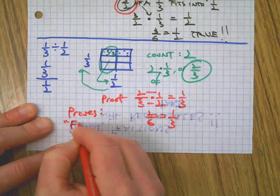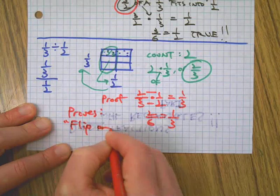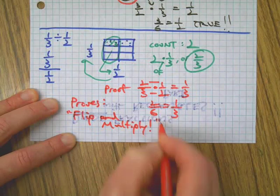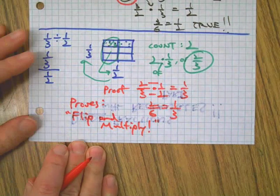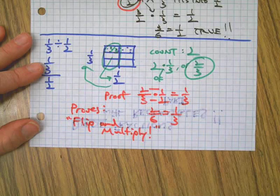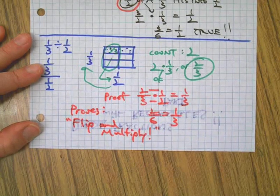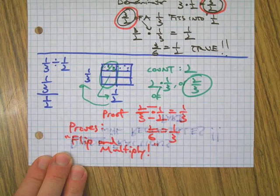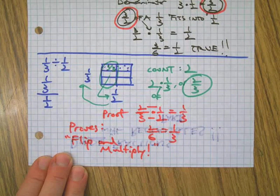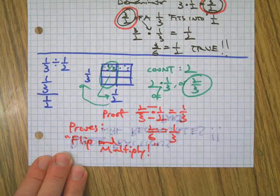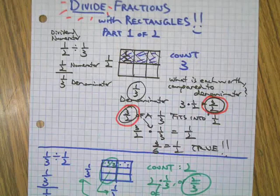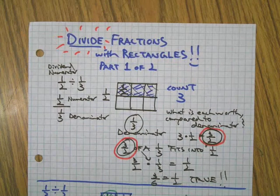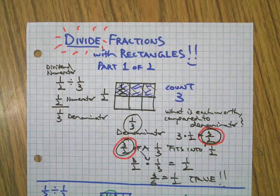And this also proves the flip and multiply technique, which is how most people would solve these problems. But sometimes you're asked to make a picture, and this is how you would do that. If you'd like to see more complicated examples, click this link here and go to the next video. I'll do a couple more examples using more complicated fractions. Thanks for watching. That is how you use rectangle models to represent fraction division. Talk to you later.